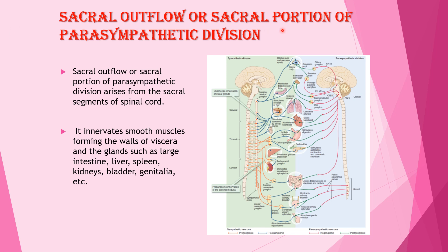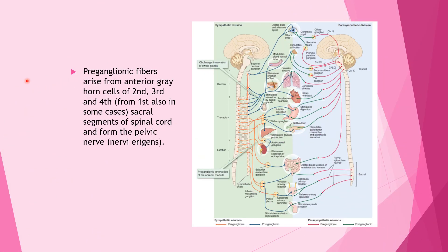The sacral outflow, or sacral portion of the parasympathetic division, arises from the sacral segments of the spinal cord. It innervates the smooth muscles forming the wall of the viscera and glands such as the large intestine, liver, spleen, kidney, bladder, and genitalia. Preganglionic fibers arise from the anterior gray horn of the 2nd, 3rd, and 4th sacral segments and form the pelvic nerves.